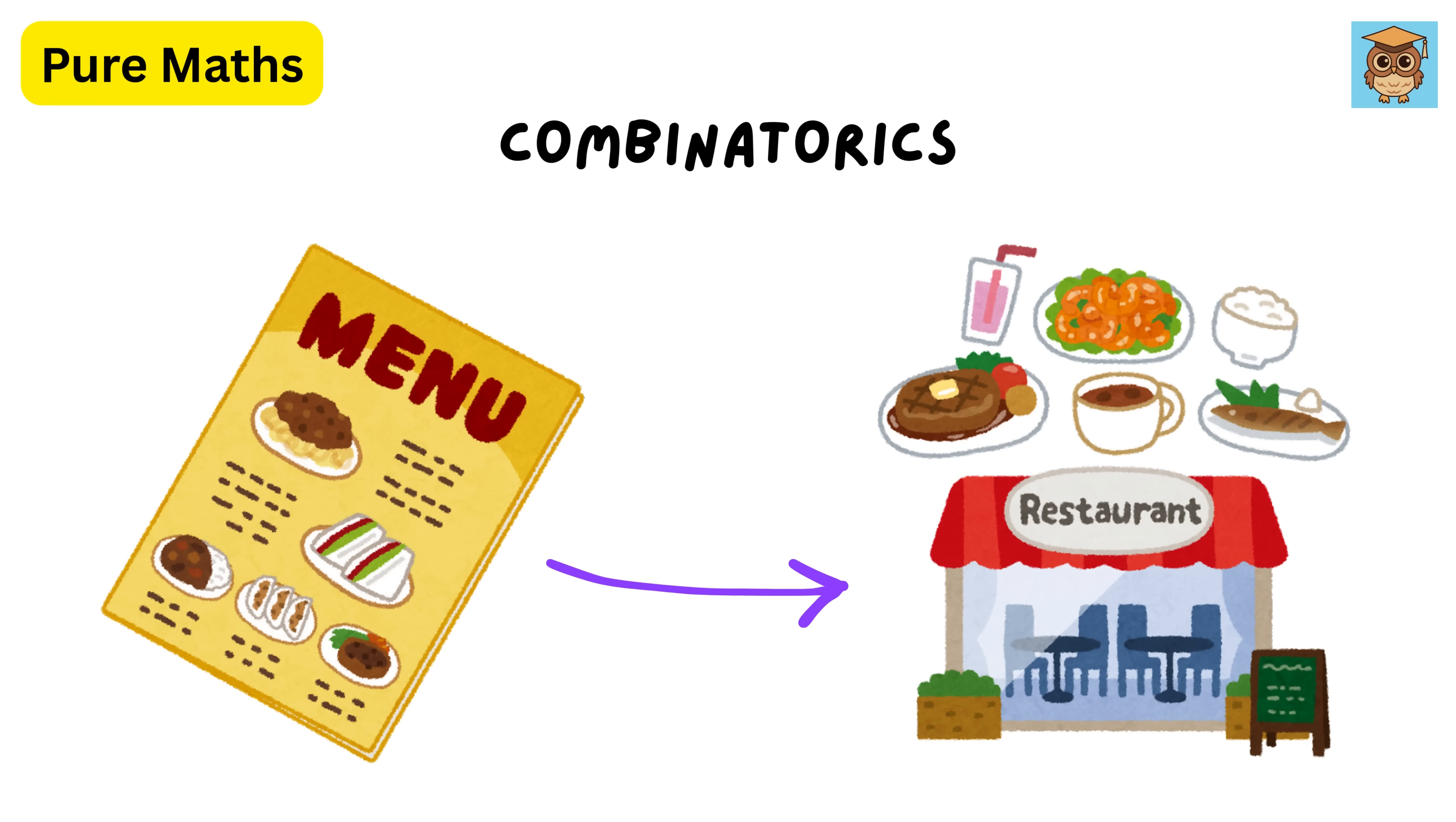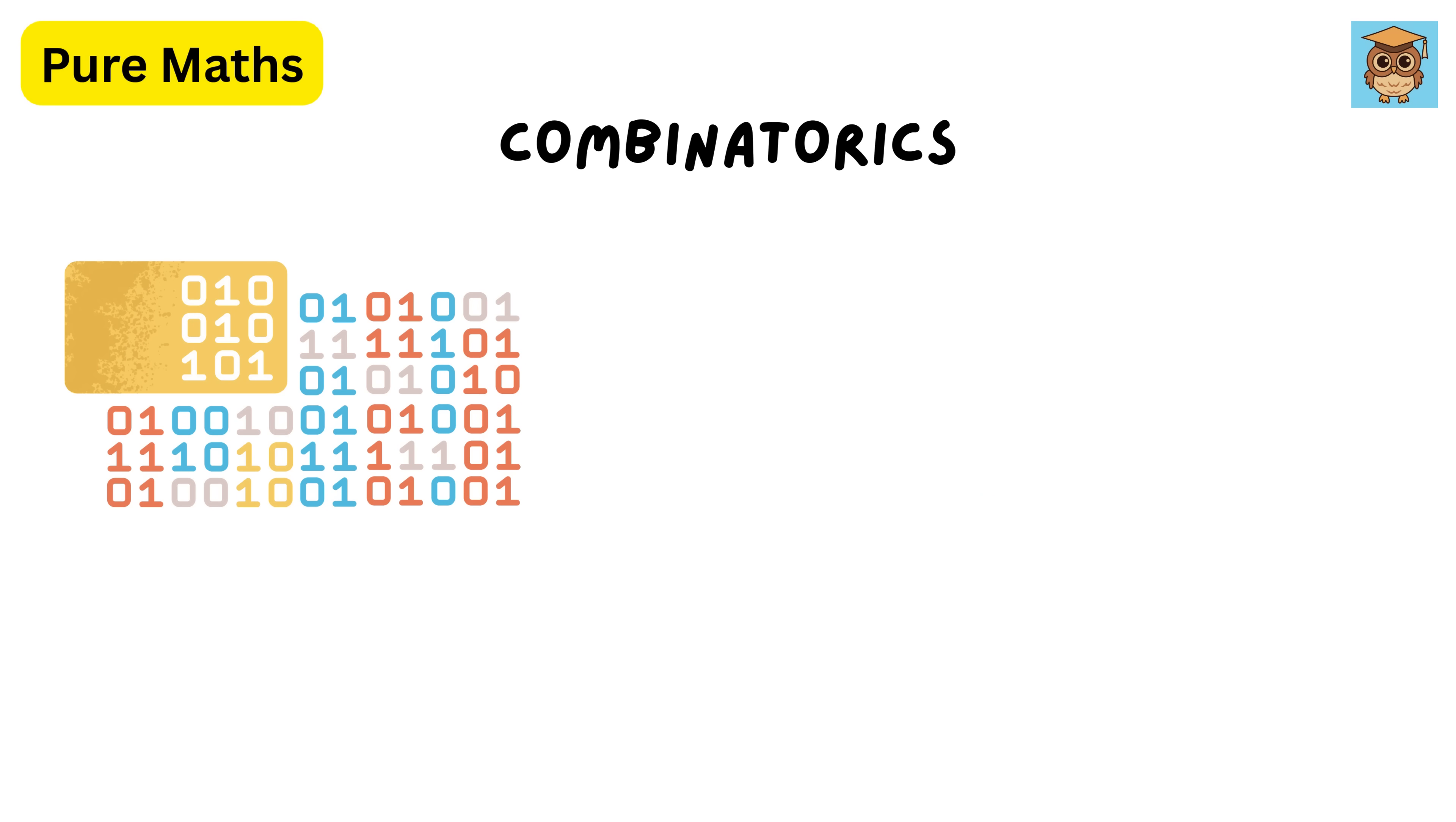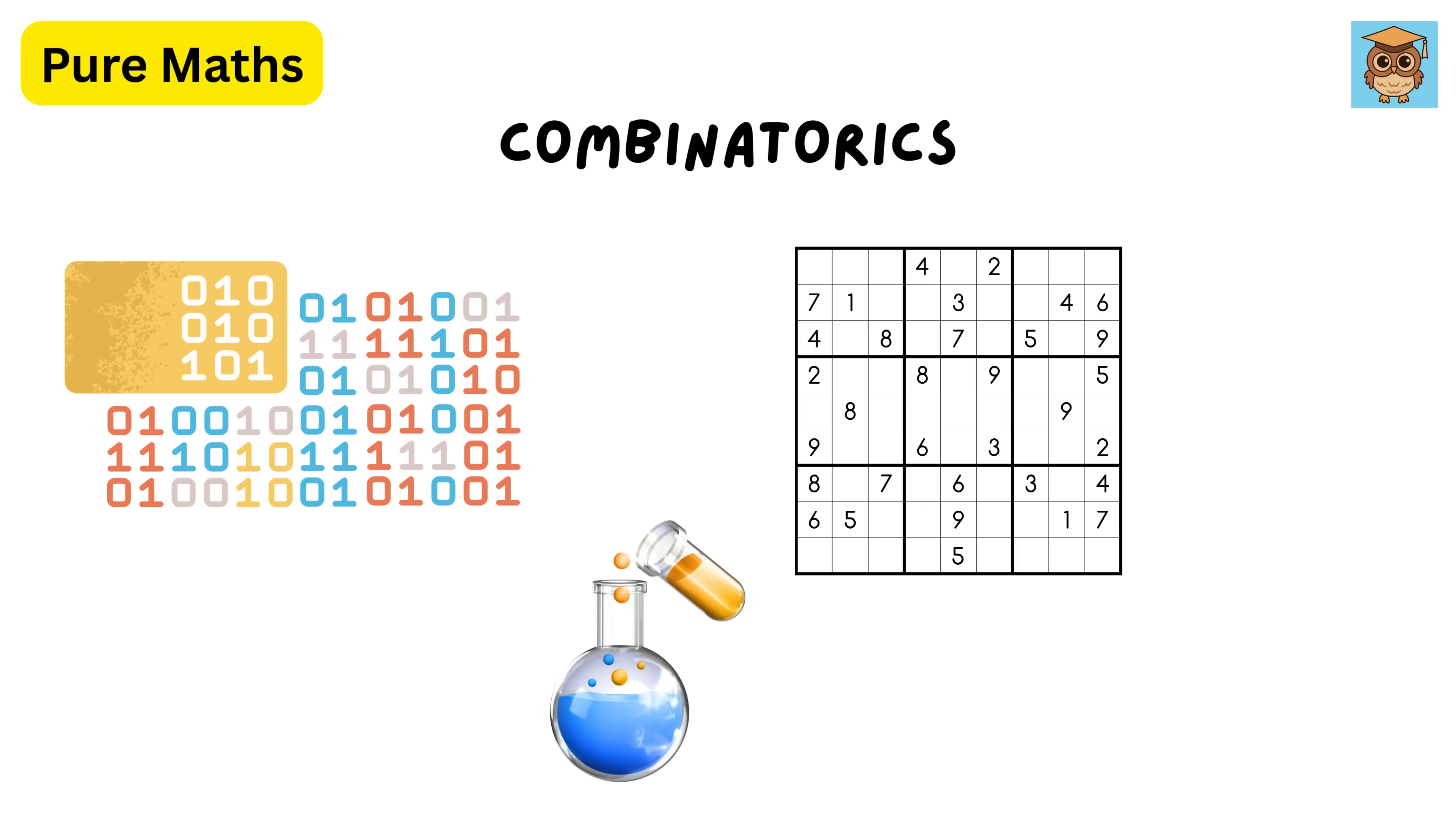How many different meal combinations can you create from a menu? Combinatorics helps us count possibilities efficiently, and it's heavily used in computer science, chemistry, game design like Sudoku or Rubik's Cube solutions, and probability.